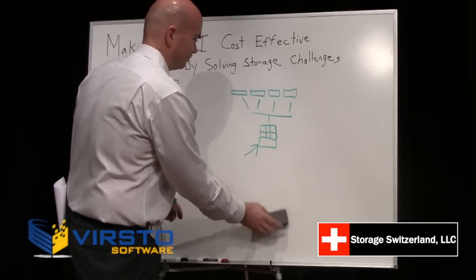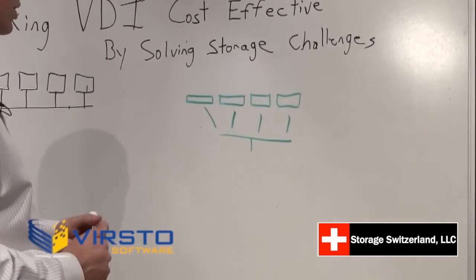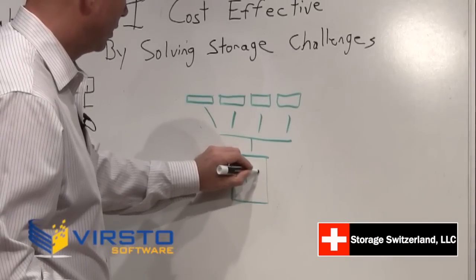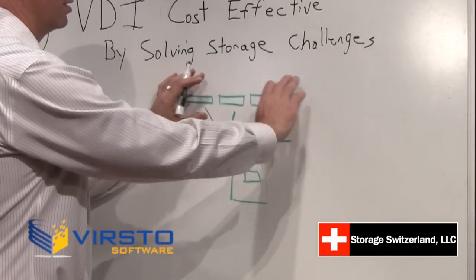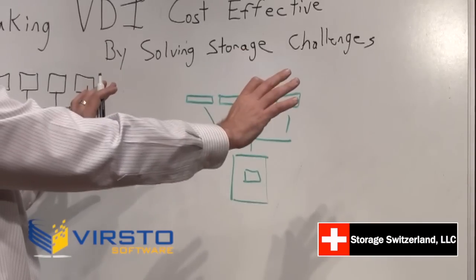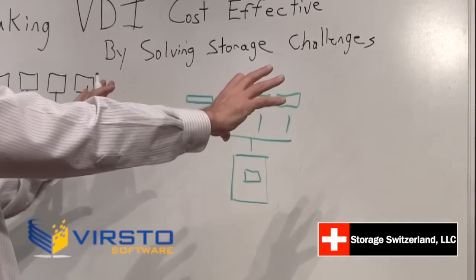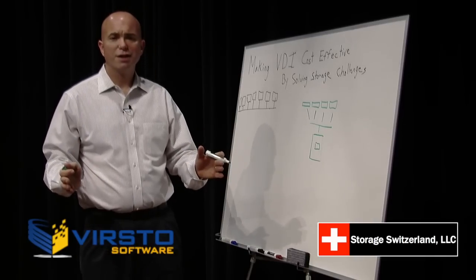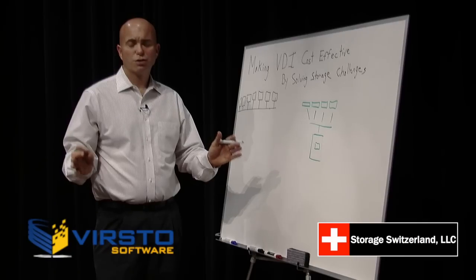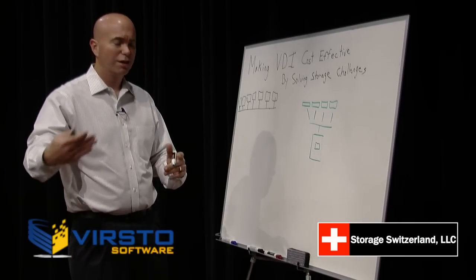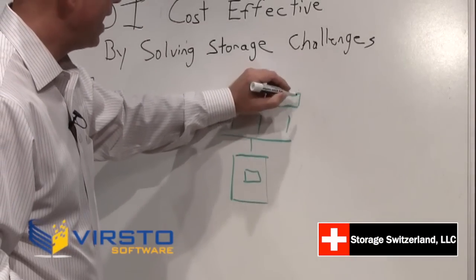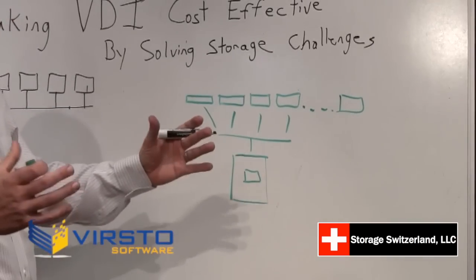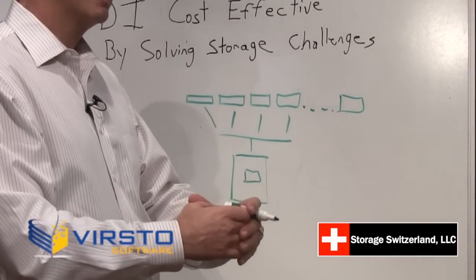What you would typically do in this environment is create a golden master — that is, for all intents and purposes, the operating system, primary applications, and things like that, for all of the clients in the environment. If this is done across 1,000 or 5,000 desktops, that will save an enormous amount of storage capacity because we're not repeating the installation of the OS. Essentially, each virtual machine we add will keep leveraging a few golden masters, and that greatly reduces overall capacity consumption.